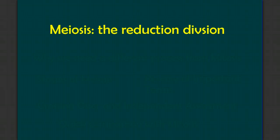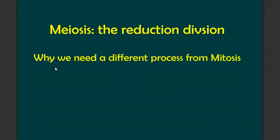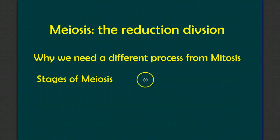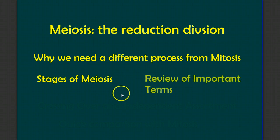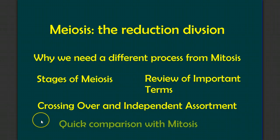In this video, we're going to look at meiosis, the reduction division. In our last video, we took an in-depth look at mitosis, a different type of nuclear division. So the first question we have to ask is: why do we need a different process from mitosis? We'll take a close look at the stages of meiosis, and in doing so, we'll review some important terms such as crossing over and independent assortment. And finally, we'll end with a quick comparison with mitosis.